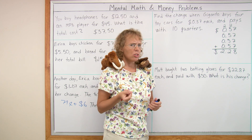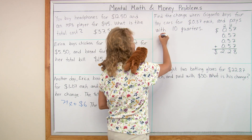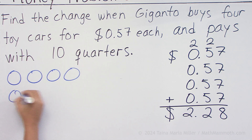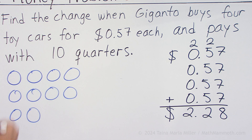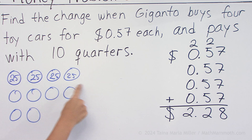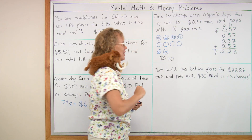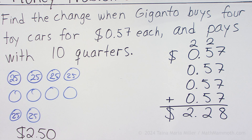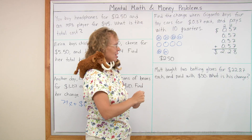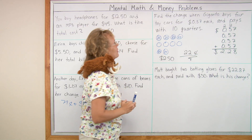He pays with 10 quarters. How much is 10 quarters? If you don't know how to multiply, you could solve it this way — draw those 10 quarters. Four quarters makes a dollar, right? So here's a dollar, here's another dollar, and this would be 50 cents. So $2.50. He pays with $2.50 and his total is $2.28. What is the change, the difference between these numbers? It is $0.22.